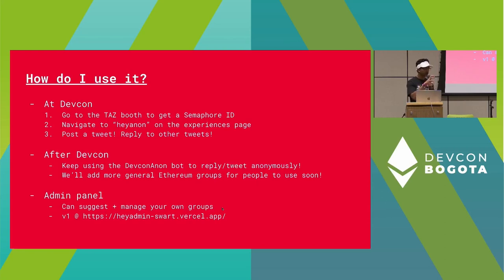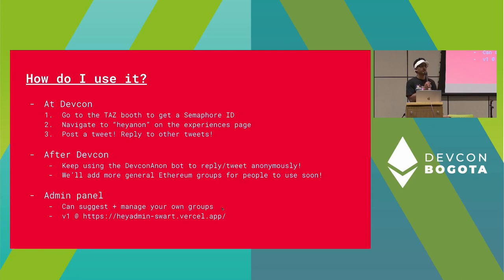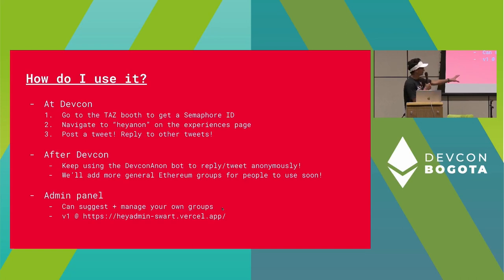We're going to add more general Ethereum groups that more people can post to very soon. We recently shipped a version of an admin panel where people can suggest their own groups — this can be NFT owners, some existing thing, or you can even just make a group with your friends and post on behalf of your little friend group. There's a V1 at this link and we're going to clean it up and add it to the Hanon website very soon.